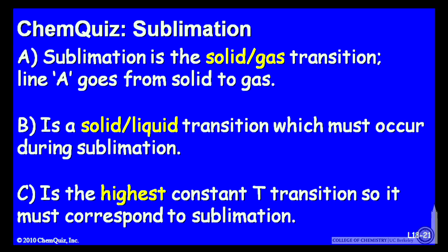Let's look at a possible explanation for each answer. A: Sublimation is the solid-gas transition, and line A goes from solid to gas. B: B is a solid-liquid transition, which must occur during sublimation. Or C: